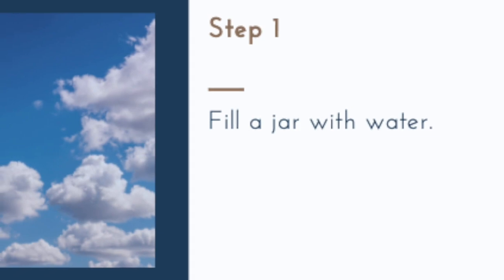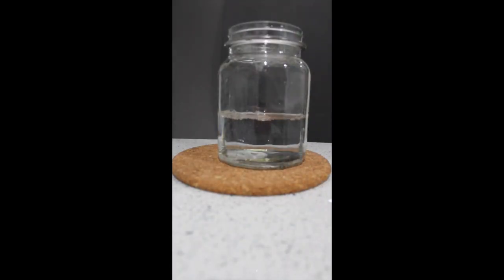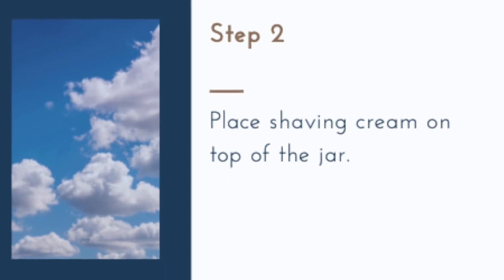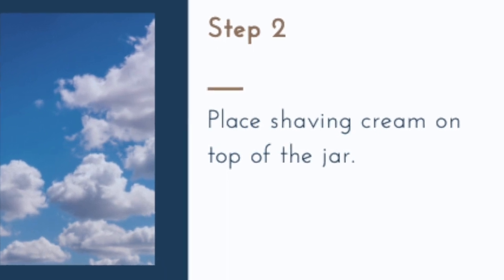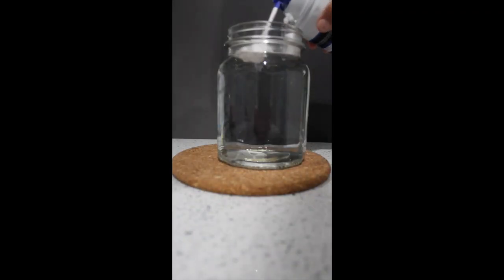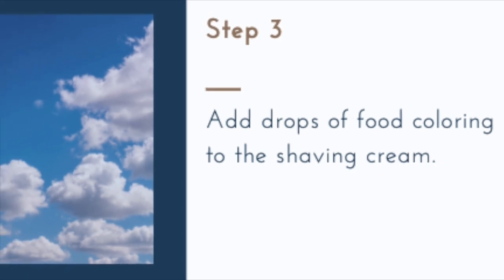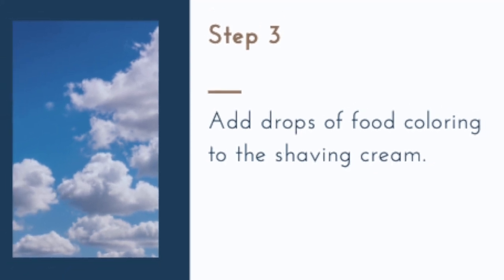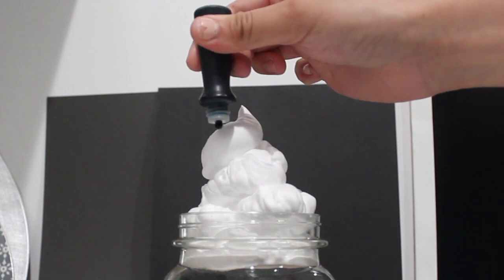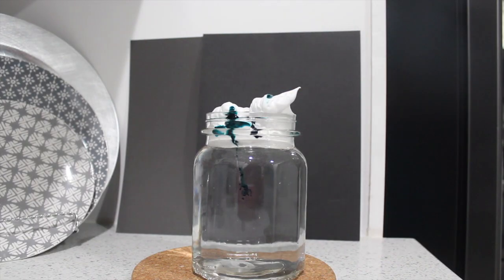First you want to fill the jar with water. Next you're going to place shaving cream on top of the jar. Then you can begin adding drops of food coloring to the shaving cream and observe what happens to the water as you add more and more drops.